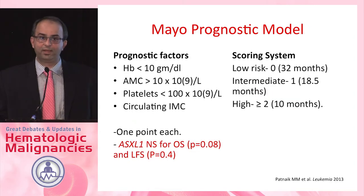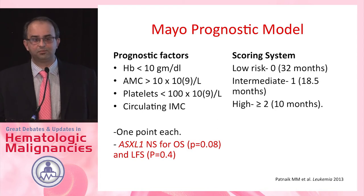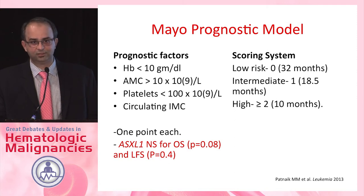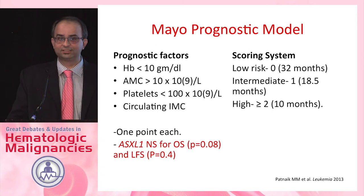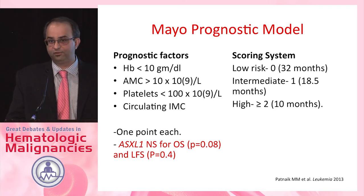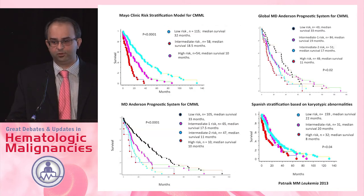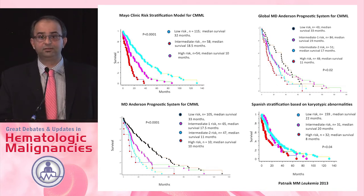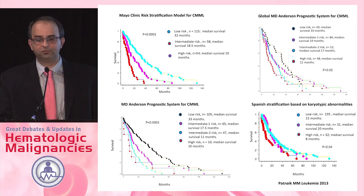We started working on this at the Mayo Clinic back in 2012 with a large database of CMML patients. We identified anemia, monocytosis, thrombocytopenia, and circulating immature myeloid cells — including myelocytes, promyelocytes, metamyelocytes, and blasts — as adversely prognostic. In this study we included all ASXL mutations of different types and found they did not impact survival, giving rise to the Mayo Prognostic Model. This stratifies patients into three groups — low, intermediate, and high risk — validated in the Moffitt CMML database and outperforming older models including the MD Anderson model and the Spanish model.